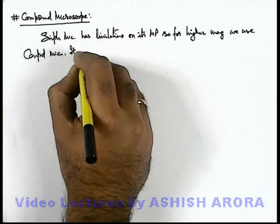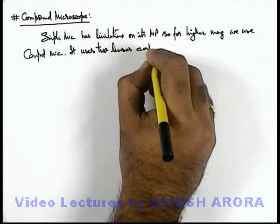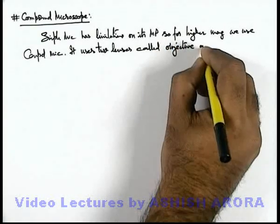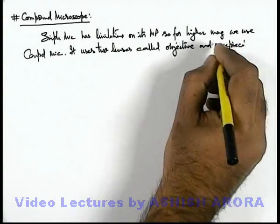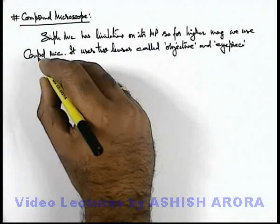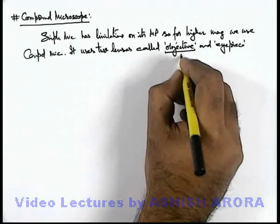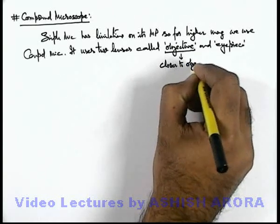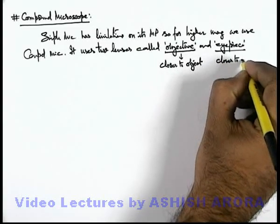We can say that a compound microscope uses 2 lenses called objective and eyepiece. Due to the successive magnification of these 2 lenses, the magnifying power of a compound microscope is much higher compared to a simple microscope. The lens termed as objective is closer to the object, and the eyepiece is the one which is closer to the observer's eye.